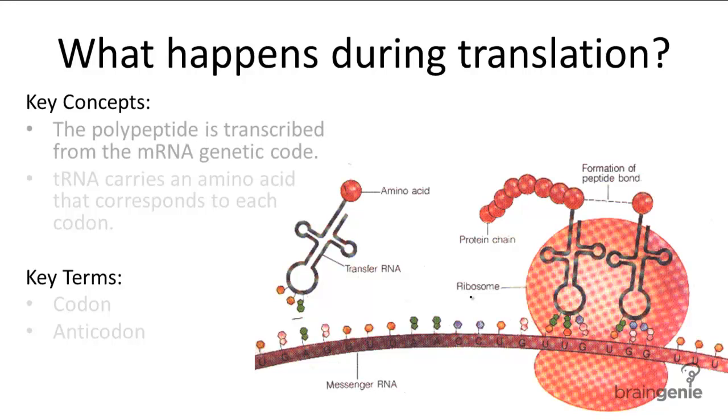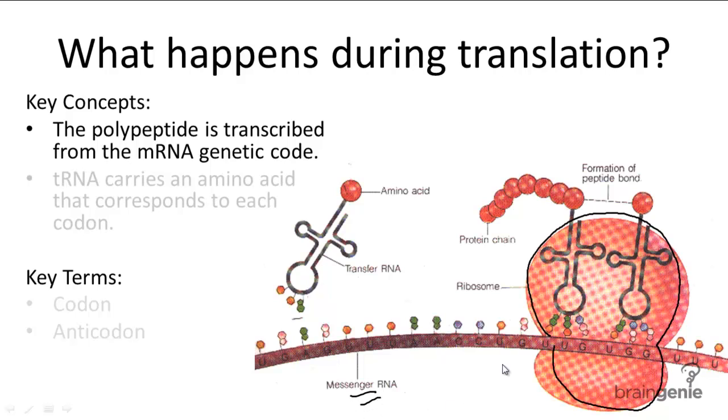Translation is the process of converting the genetic information in mRNA into a polypeptide chain. This process occurs in the ribosome, which holds down the mRNA while the tRNA brings corresponding amino acids from the cytoplasm.